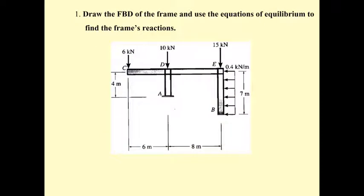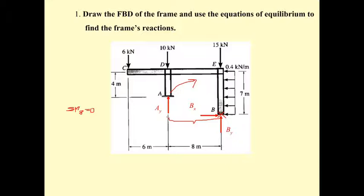For the free body diagram of the frame, we have a roller at A and a pin at B, giving us three unknown forces. The best approach is to take the summation of moments about B equal to zero. The force A sub Y has a line of action with a distance of 8 meters from B, and it rotates clockwise, which we set as positive, so we have 8 times A sub Y.